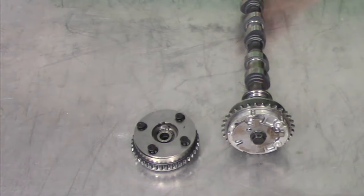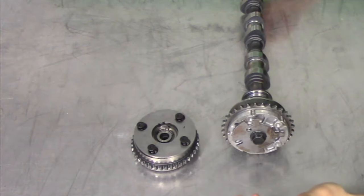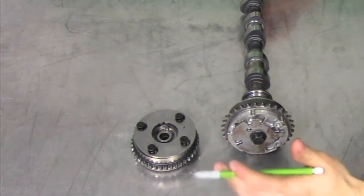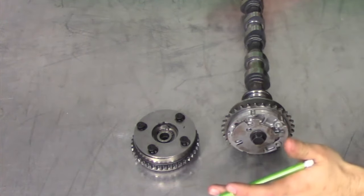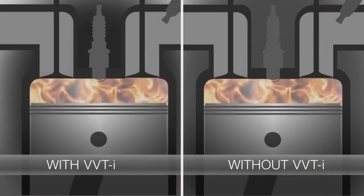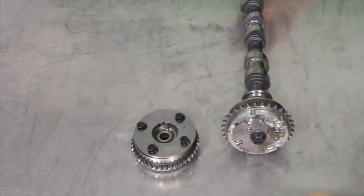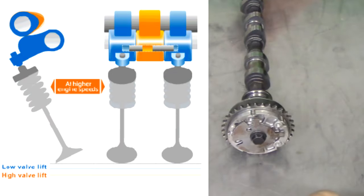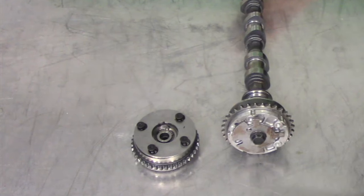Now that we've covered basic engine mechanical theory and the four-stroke cycle, let's get into variable valve timing. What does variable valve timing mean? Variable means changing; valve is the engine component that lets air in and out; and timing is the relationship between when we let air in and out according to crankshaft position. So variable valve timing means changing how long the valve stays open and when to open it based on crankshaft position, load, and other factors. Why do we need to change the valve timing?